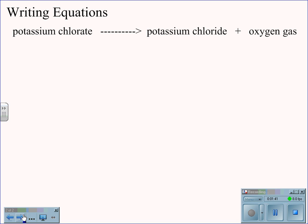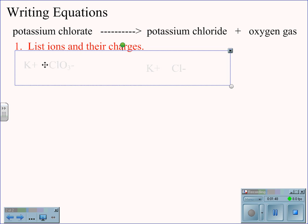Potassium chlorate yields potassium chloride plus oxygen gas. We will again list the ions and their charges. Potassium and chlorate are both plus one and minus one respectively. Potassium is plus one and chlorine is minus one.